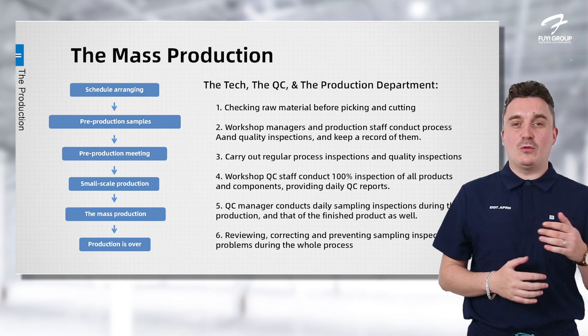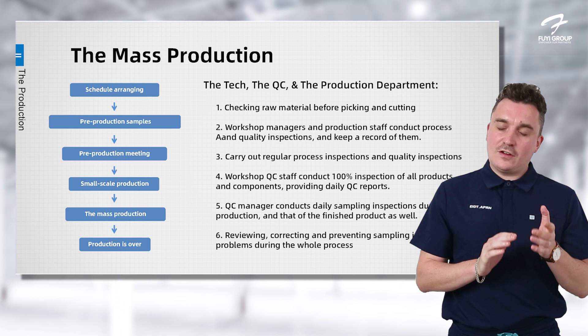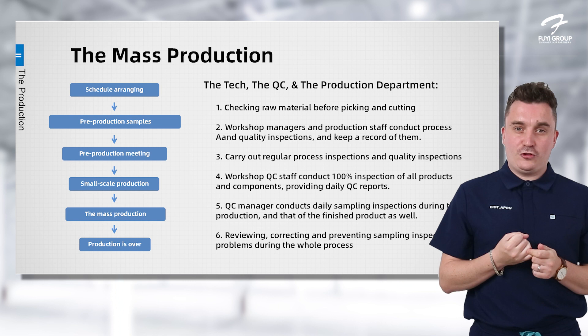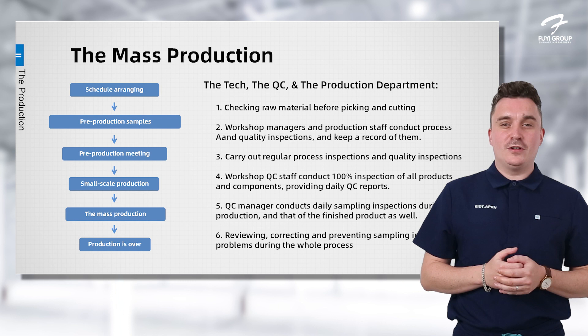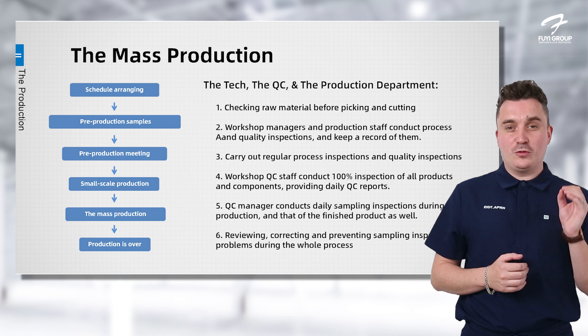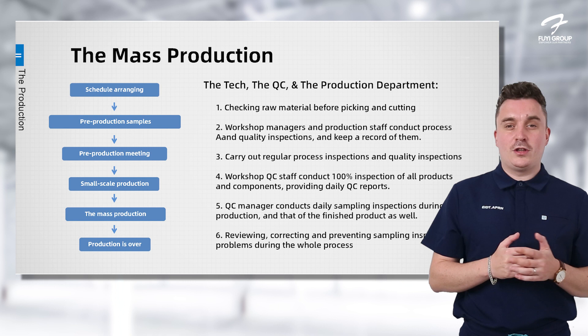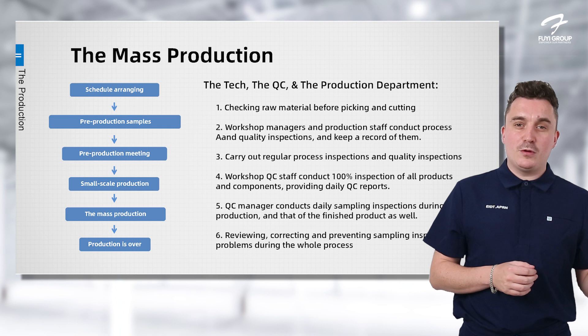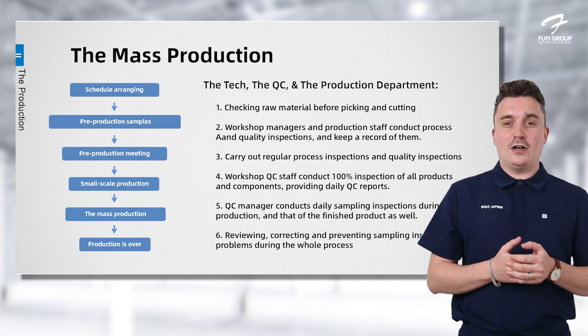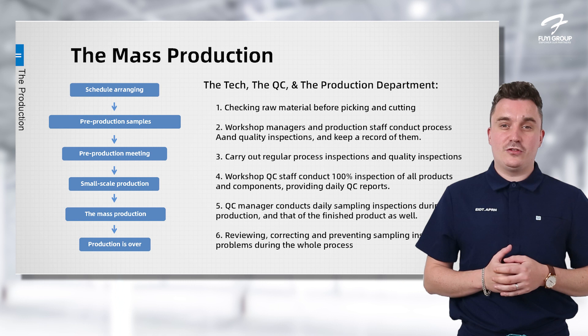Production starts with a small batch, supervised by three major departments: production, QC, and technical. These three departments will walk through the entire first batch to make sure everything is perfect. In this small batch production, the first step is picking and cutting, again supervised by all three departments. Secondly, our workshop managers conduct extensive sampling on the batch as we work through it. Third, we consistently carry out quality inspections to ensure there are no problems during the process — and if there are, we'll start again or change our approach. The QC manager also conducts daily inspections and prepares quality reports.